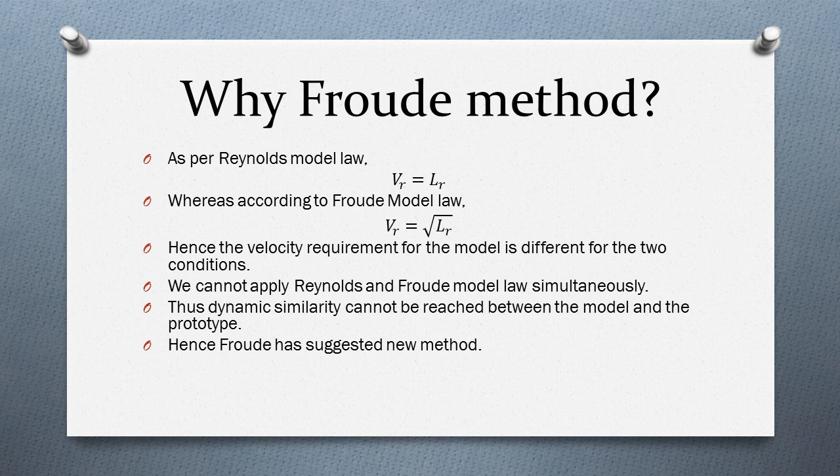Now, why Froude's method? As per the Reynolds model law, the velocity ratio Vr equals the scale ratio Lr, whereas according to Froude's model law the velocity ratio is √Lr. Hence the velocity requirement for the model of the ship is different for the two conditions, so we cannot apply Reynolds and Froude's model law simultaneously. Thus dynamic similarity cannot be reached between the model and the prototype.